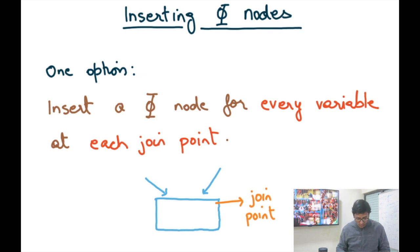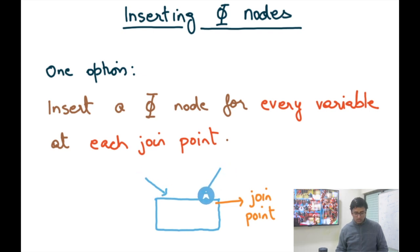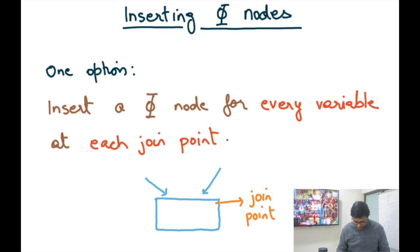One option — not a particularly good one — is to insert a phi node for every variable at each join point. A join point means there are greater than one incoming edges to the basic block. So at every join point, add a phi node for every variable present in the program. But as you can imagine, this is wasteful because sometimes you really don't need a phi node.